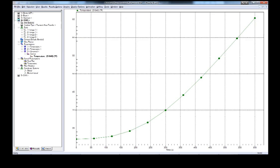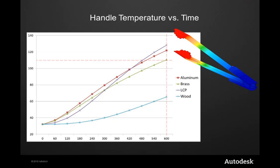The plot here shows the peak handle temperature versus time. This is called a transient thermal analysis since we're predicting behavior over time. Recall the criteria for safety was for the handle temperature to be below 110 degrees after 10 minutes. You can see this criteria represented by the red dashed lines.